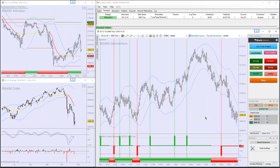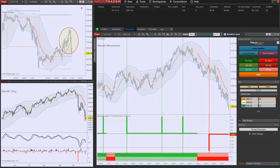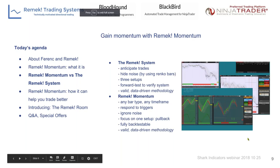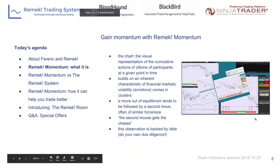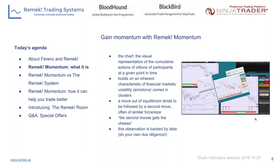Here's a quick look — the NT7 version and here's the NT8 version. We'll look at these in more detail in just a few minutes. Now, how can we gain momentum in a trading business with REMEC Momentum? When we look at a chart, we're looking at the visual representation of the feelings, fears, and greed of many participants in the financial market — the cumulative actions of zillions of people.